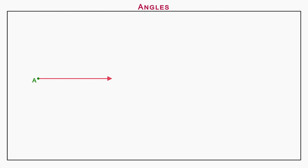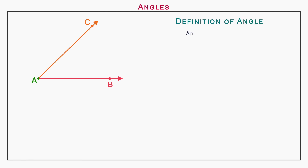Let us draw an angle. Two different rays are drawn from the same origin, i.e. Ray AB and Ray AC. So we define an angle as: an angle is the union of two rays having the same origin.